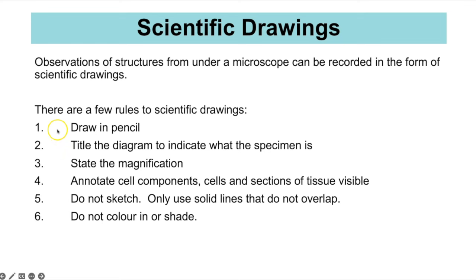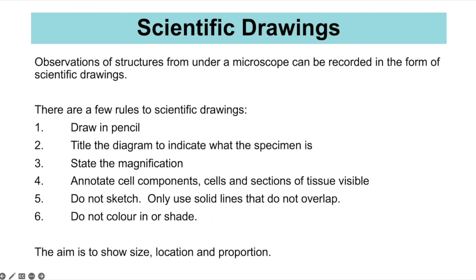Scientific drawings should be drawn in pencil. You should have a title indicating what the specimen is, and if the magnification is known you should state it. Always annotate the cell components, cell sections, and any tissues visible. There should be no sketching — use only solid lines with no overlapping lines. It's not an artistic drawing; it's a factual drawing showing shape, proportion, and location. There should be no colour or shading.